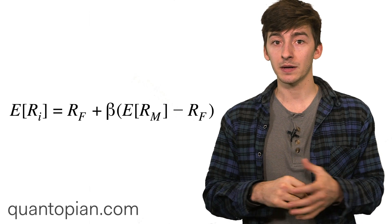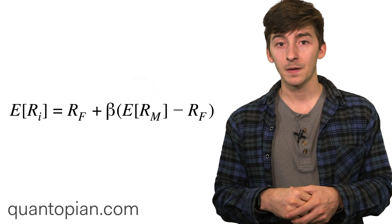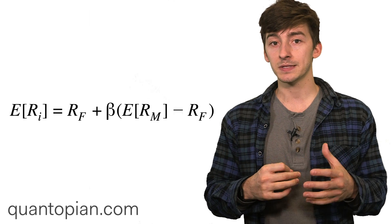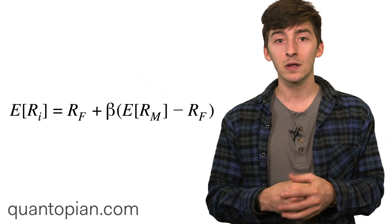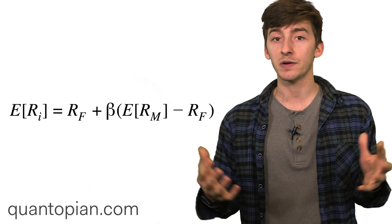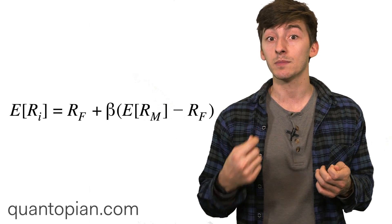Beta is traditionally market beta, which is something that comes from the capital asset pricing model or the CAPM. The CAPM is an equilibrium style economic model for trying to calculate an appropriate return for some security or portfolio given the risk-free rate and the returns of the market.